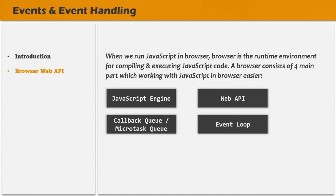Out of these four components, the Web API is the one which provides DOM APIs like getElementById, querySelector, or any other DOM method which we have used so far in this section. And it is this Web API which also provides us the console.log function — the console.log function which we have been using for logging variables and outputs in the browser's console.